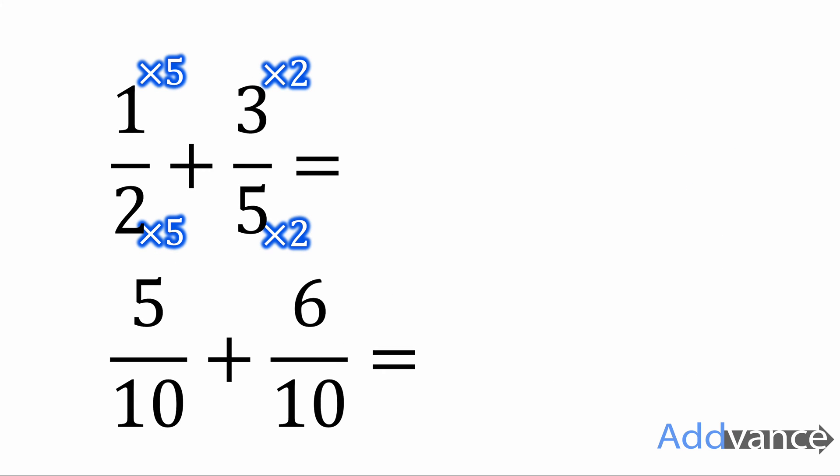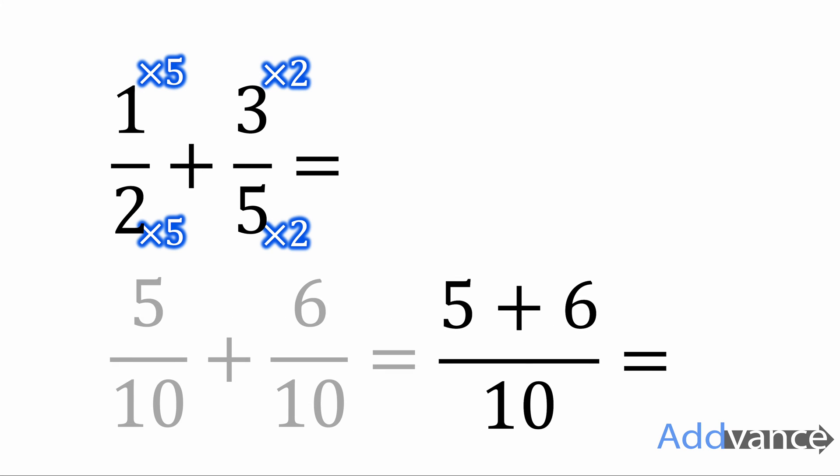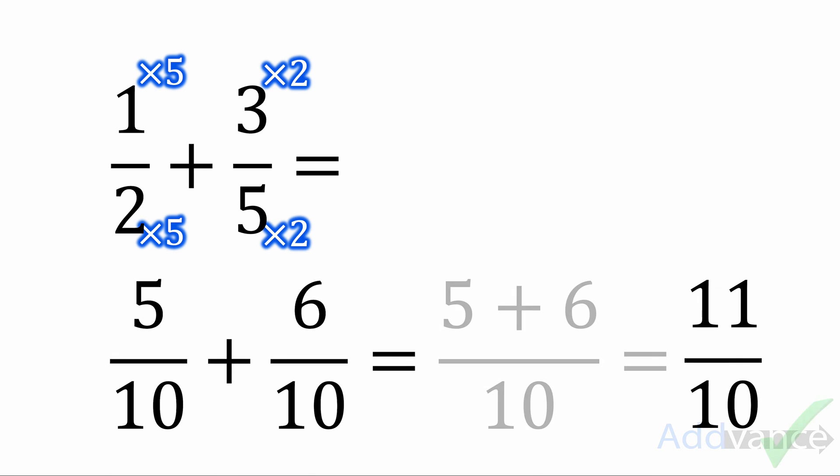Now that we have the same denominator for both fractions we can add them together by simply adding the numerators. So the sum of these two fractions is 11 tenths and that's how you add two fractions together.